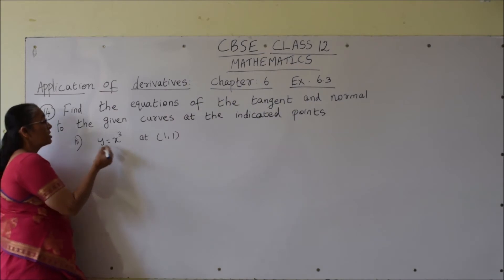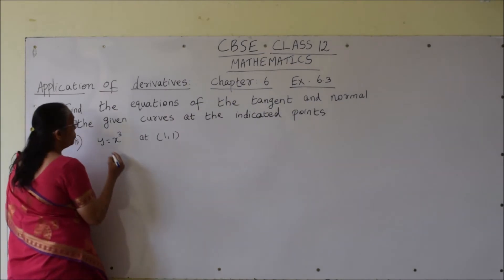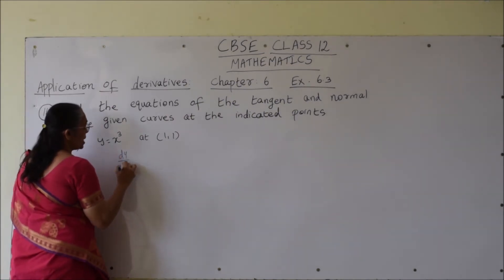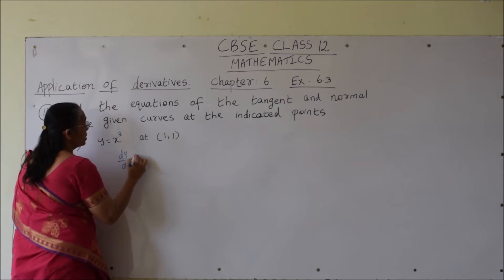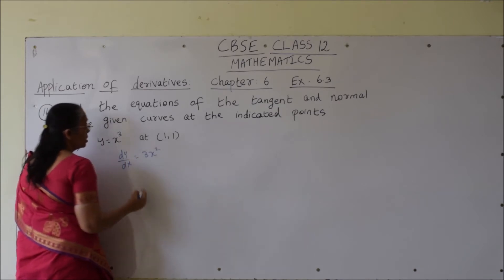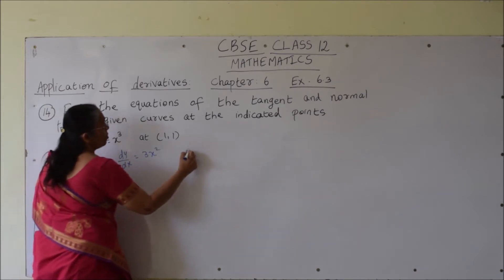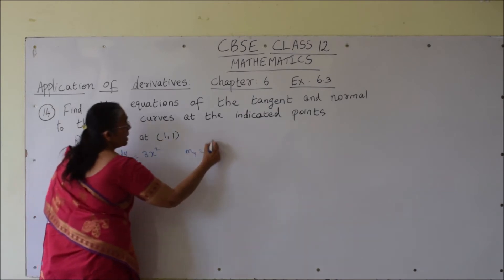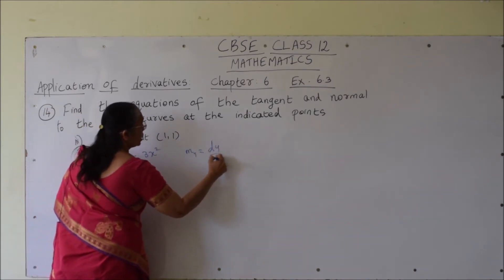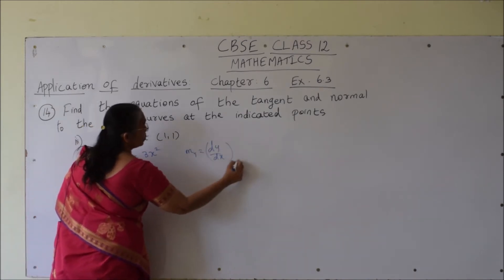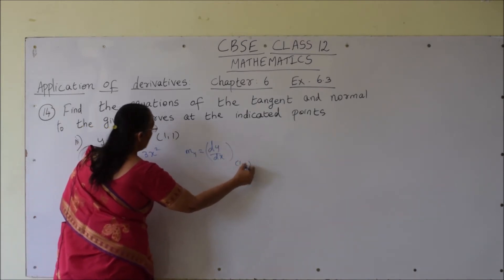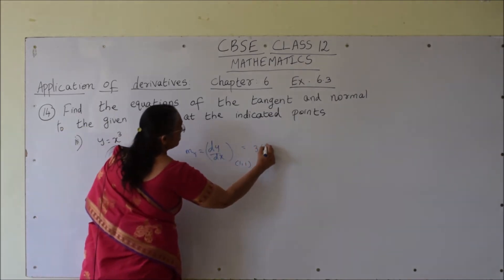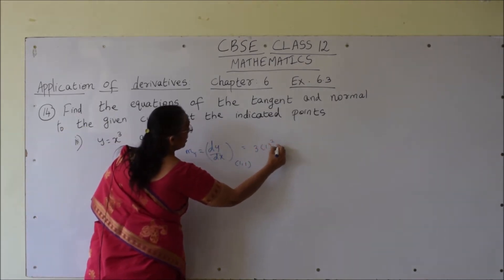Third bit: y is equal to x cube. So the differentiation is dy by dx equals 3x square. Now the slope of tangent is dy by dx at the particular point, which is given as (1, 1). So the slope of tangent is 3 times 1 square, which is 3.